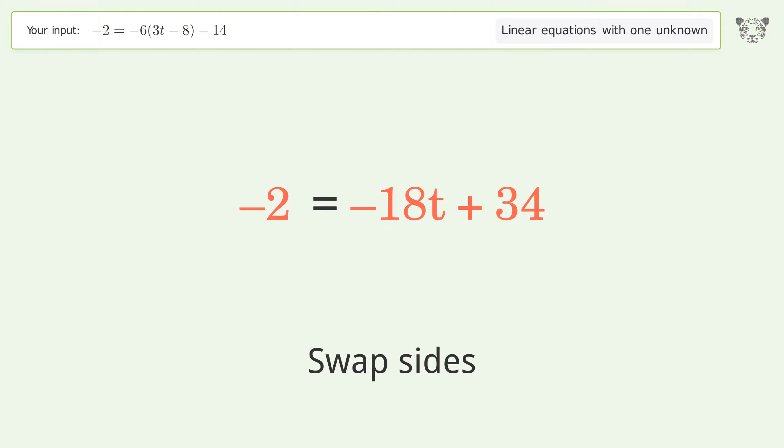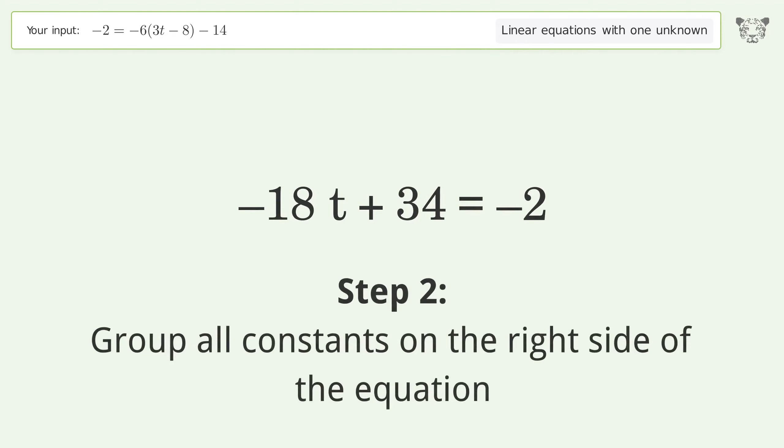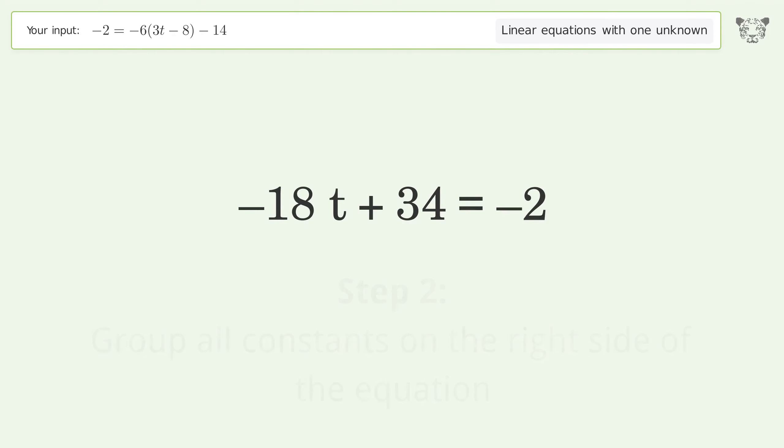Swap sides. Group all constants on the right side of the equation. Subtract 34 from both sides.